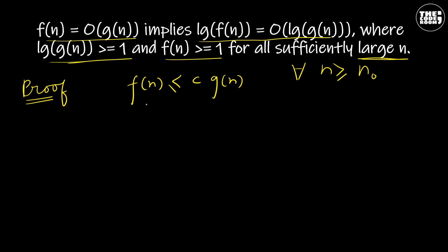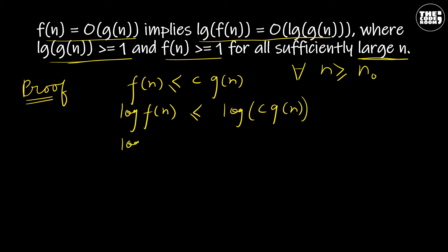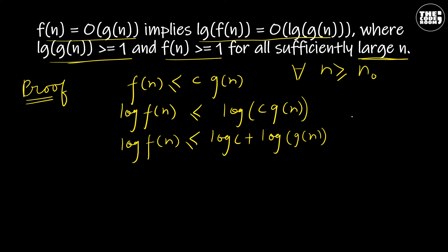As f(n) is greater than or equal to 1 and log g(n) is also greater than or equal to 1, we can take log on both sides of our inequality without risking a change in directionality. So log f(n) ≤ log(c·g(n)). By using the property of logarithmic functions, we can write log f(n) ≤ log c + log g(n). As log g(n) is greater than or equal to 1 for sufficiently large n, g(n) cannot be a monotonically decreasing function. Hence, log g(n) would be greater than or equal to log c.